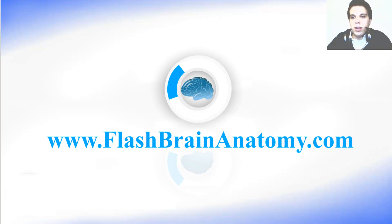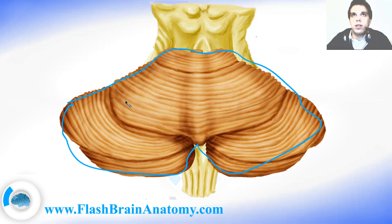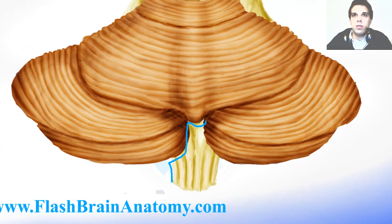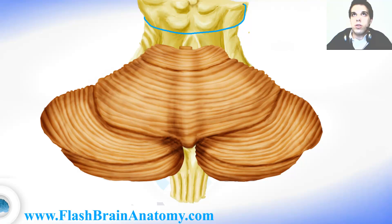Now I will illustrate the medulla oblongata from the dorsal point of view. This brown structure is called the cerebellum, or the small brain. What we can see a little bit here is the medulla oblongata, and this part up there is already the mesencephalon, or midbrain.